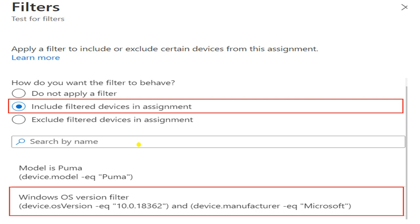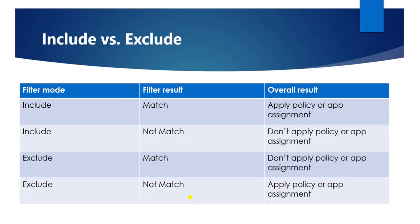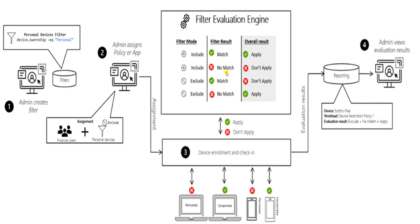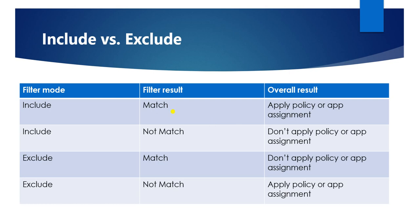If you apply all three filter types in a deployment, the priority sequence is: first exclude, second do not apply, and third include. For the include/exclude logic: if you include the filter and it matches, it will apply; if include and no match, it won't apply. If exclude and it matches, it won't be applied; if exclude and no match, it will apply.